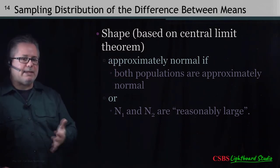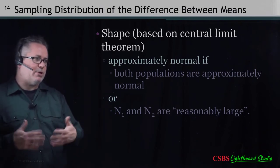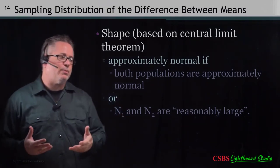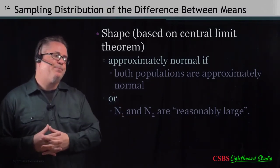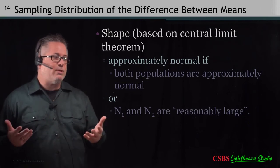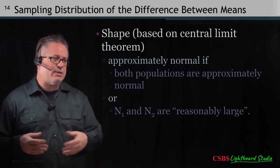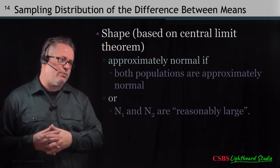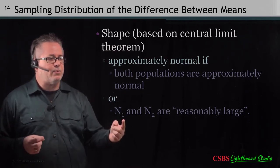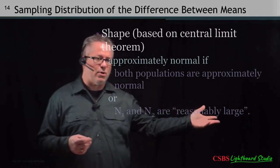In our particular sample, we only have 8 and 10. The only reason we can continue applying this test is that we're going to have to assume that aggressive behaviors are normally distributed in the population, so that the test makes sense based on the central limit theorem. We have to make that assumption because we don't have a large enough N in both groups to consider them reasonably large.